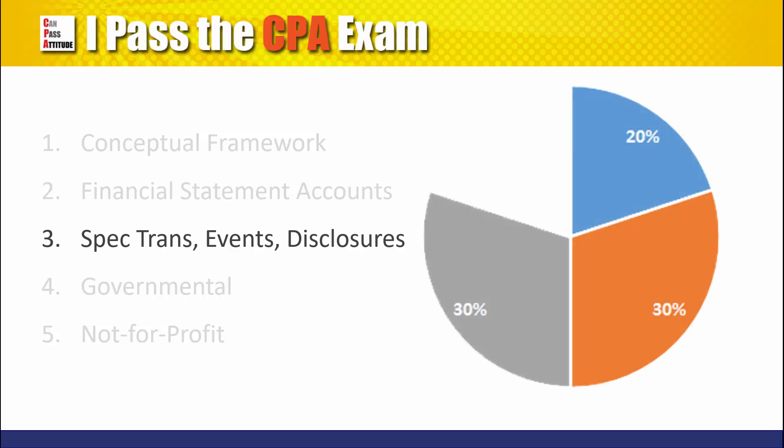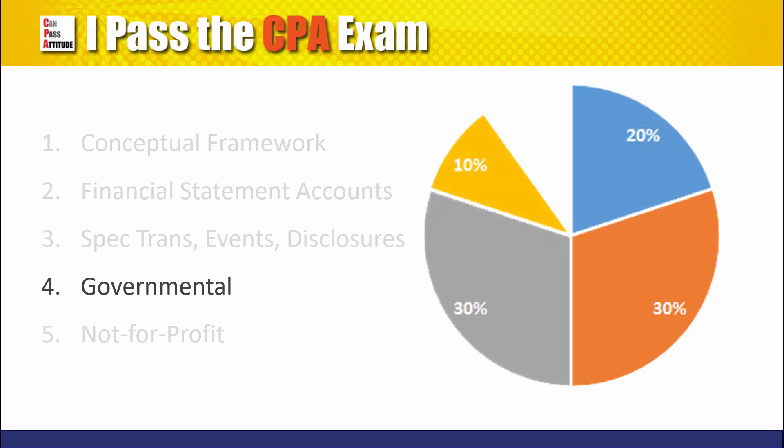Specific transactions, events, and disclosures: 27% to 33%. Governmental accounting and reporting: 8% to 12%.